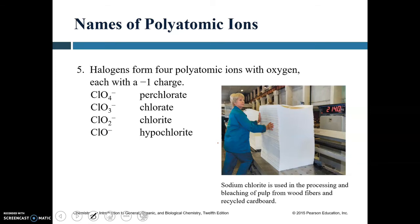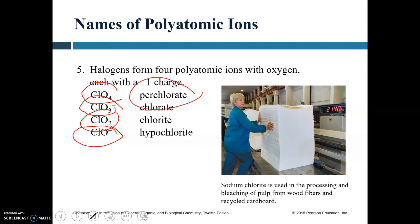For polyatomic ions containing halogens: starting with hypochlorite (ClO⁻), adding one oxygen gives chlorite (ClO₂⁻), three oxygens gives chlorate (ClO₃⁻), and four oxygens gives perchlorate (ClO₄⁻). These naming patterns apply similarly to other halogens.